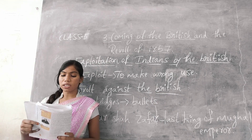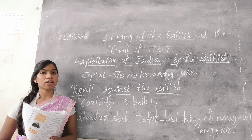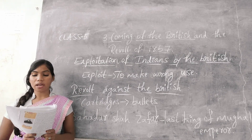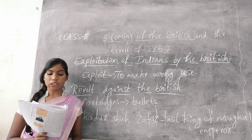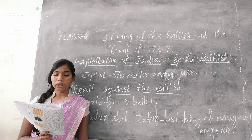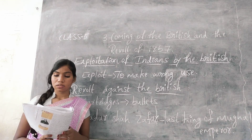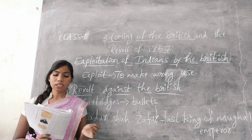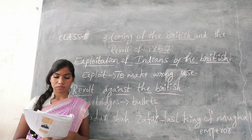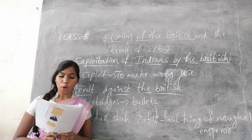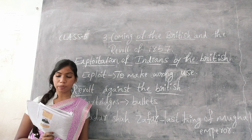Rani Lakshmi Bhai was martyred and Nana Sahib continued the battle. The revolt continued for two years before it was crushed by the British. It ultimately failed because it lacked proper leadership and planning.